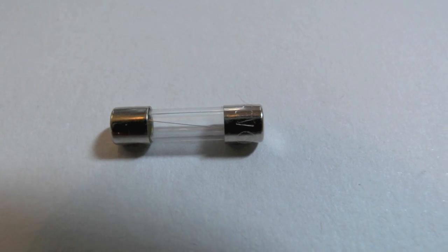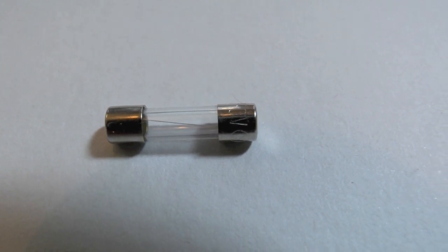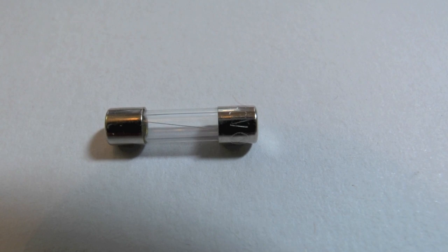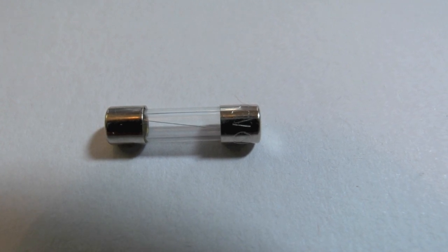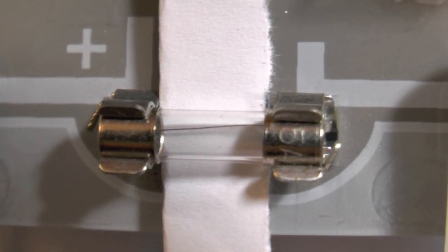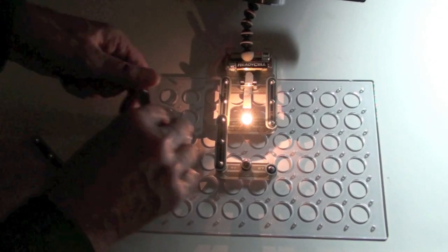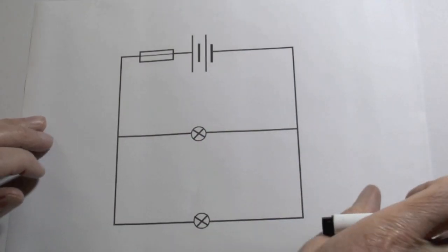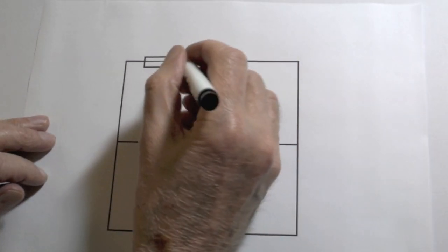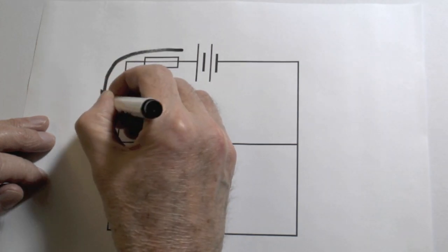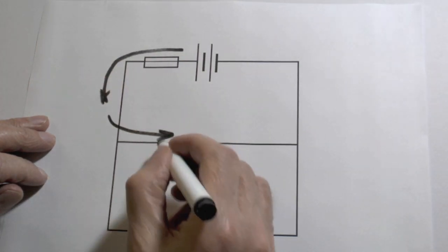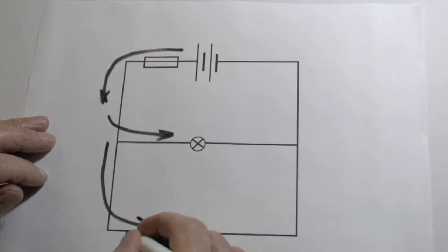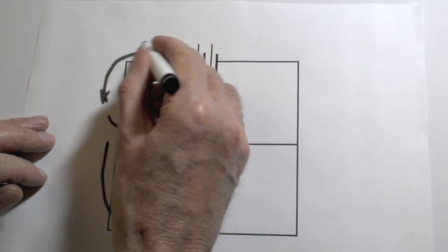The fuse is a simple device - simply a thin wire in a glass tube, and the wire will melt if too much current flows. I put a bit of paper underneath the fuse so you can see it more easily. I'm extending the circuit to put an extra bulb. This is a parallel circuit, and because it's a parallel circuit more current will flow through the fuse and from the batteries through the circuit because there are two routes that the current can take.